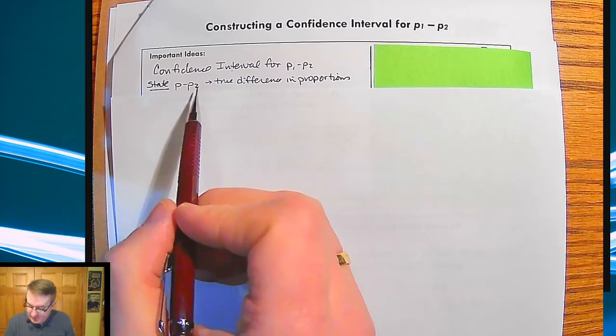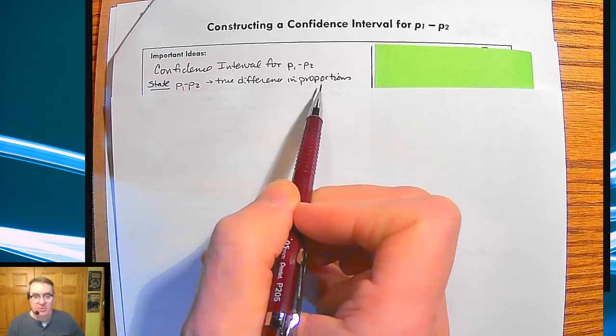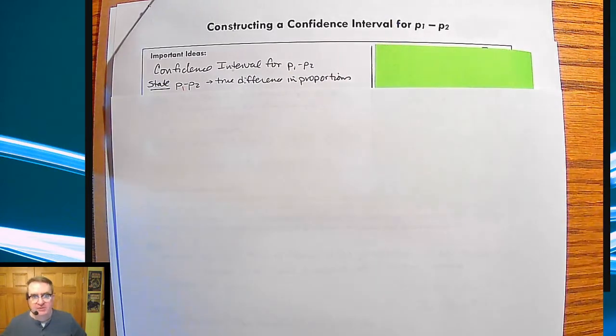So the first one is state. We're going to say P1 minus P2 is the true difference in proportions of, give some context there.